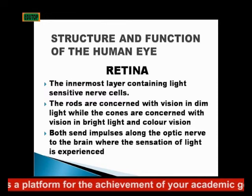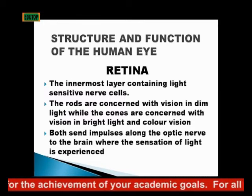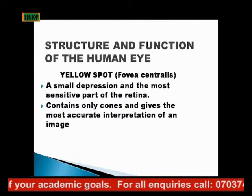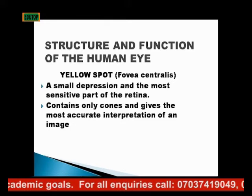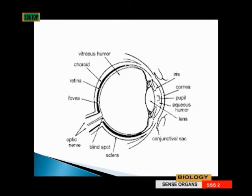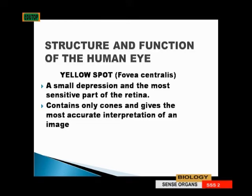Both rods and cones send impulses along the optic nerve to the brain, where the sensation of light is experienced. The yellow spot, or fovea centralis, is a small depression and the most sensitive part of the retina. It contains only cones — concerned with bright light and color vision.